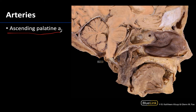The ascending palatine artery is actually going to be the main supplier of blood to the soft palate. It is typically easiest to locate as it passes between the muscle bellies — the levator veli palatini and the tensor veli palatini — but you can see that it's in very close proximity to the soft palate right here.